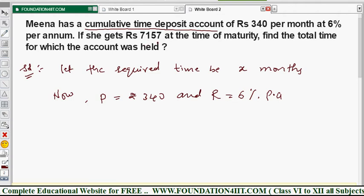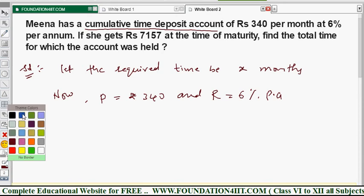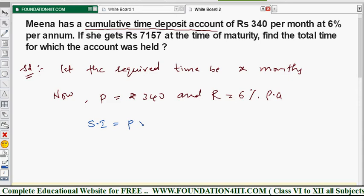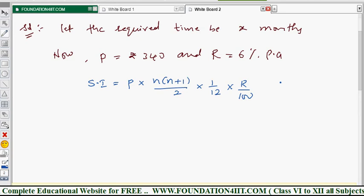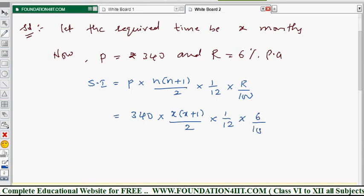The maturity value is given as ₹7157. Using the given data, we first find the simple interest. The simple interest formula for recurring deposit is: SI = P × n(n+1)/2 × (1/12) × (r/100). Substituting the values: SI = 340 × x(x+1)/2 × (1/12) × (6/100).